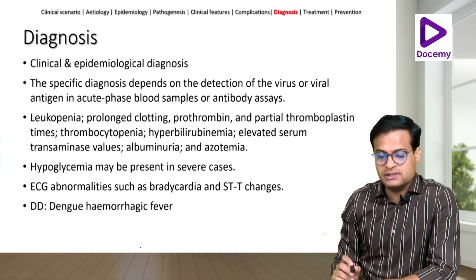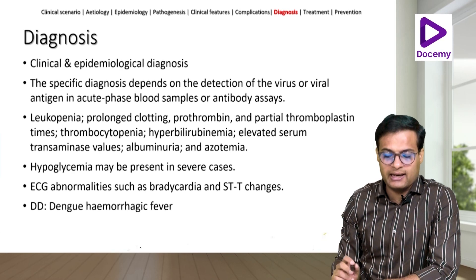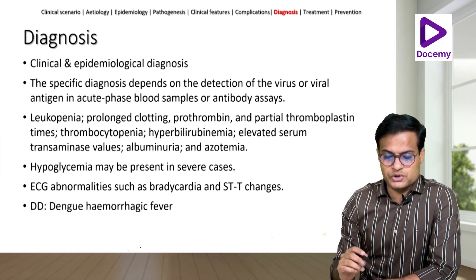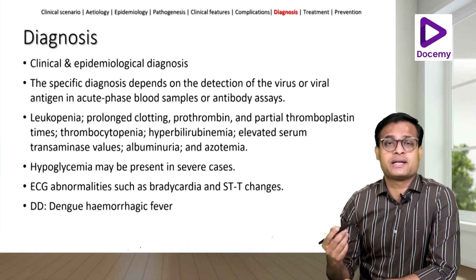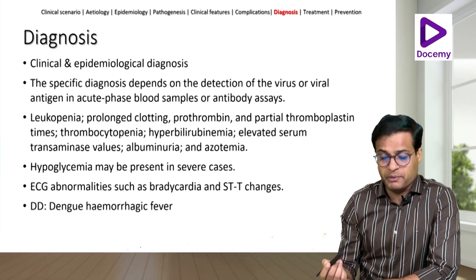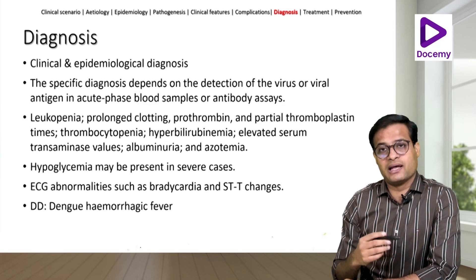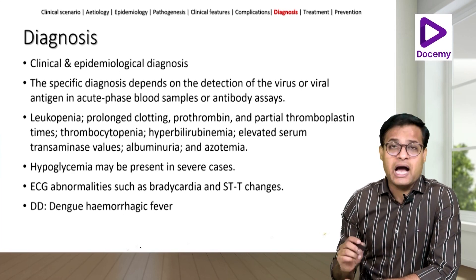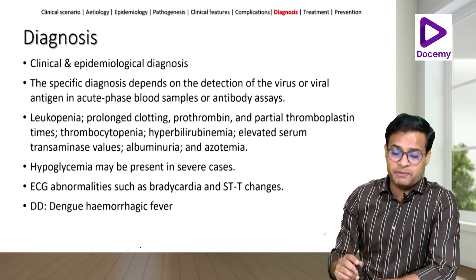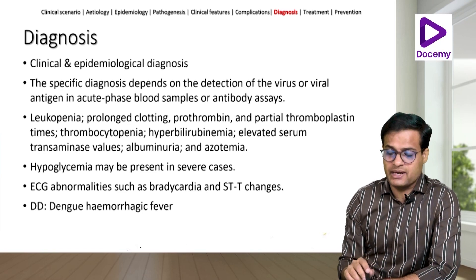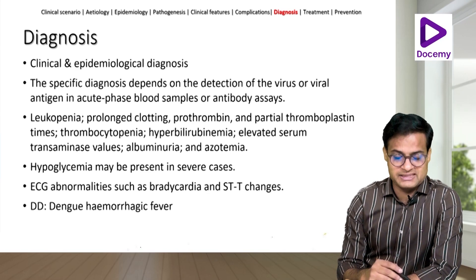The specific diagnosis depends on detection of virus or viral antigen in acute phase blood samples, or antibody assays. Blood investigations show leukopenia, prolonged clotting time (PT, APTT), thrombocytopenia, hyperbilirubinemia, elevated liver enzymes, albuminuria, and azotemia. Hypoglycemia may be present in severe cases. ECG abnormalities such as bradycardia and ST-T changes may also be seen.